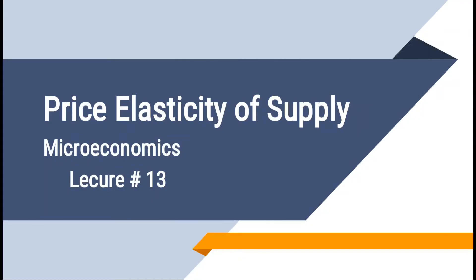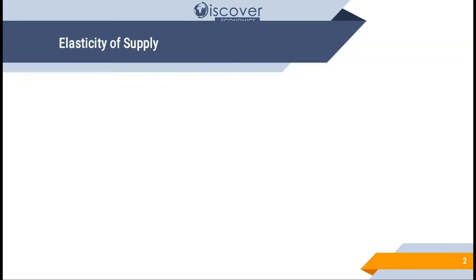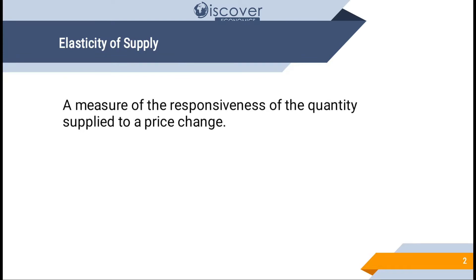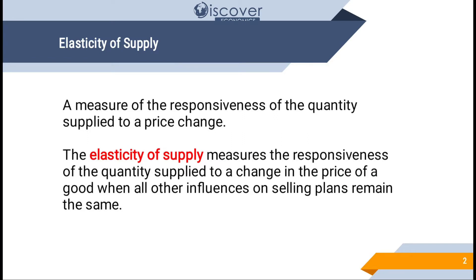Hello viewers, it's Mikulsum Ahmad. Today we are going to learn about price elasticity of supply. Elasticity of supply measures the responsiveness of the quantity supplied to a price change. There is a positive relationship between price and quantity supplied — if price increases, quantity supplied also increases, because the supplier is encouraged to produce more, confident that consumers are demanding that product. Elasticity of supply measures this responsiveness when all other influences on selling plans remain the same.